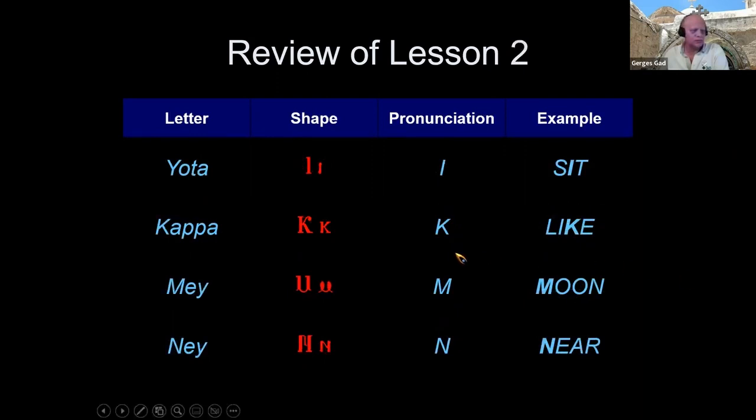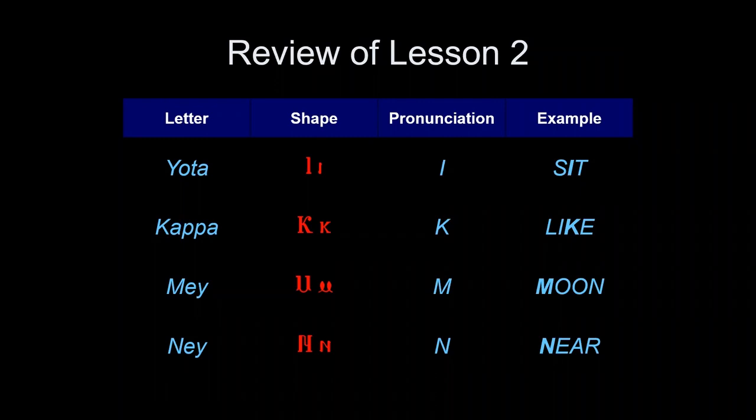Dina, you want to do the next one? Eta is like E, Theta is like Th, Iota is like I, Kappa is like K, Lambda is like L, Mi is like M in moon, and Ni is like N in near. Very good, thank you Dina.